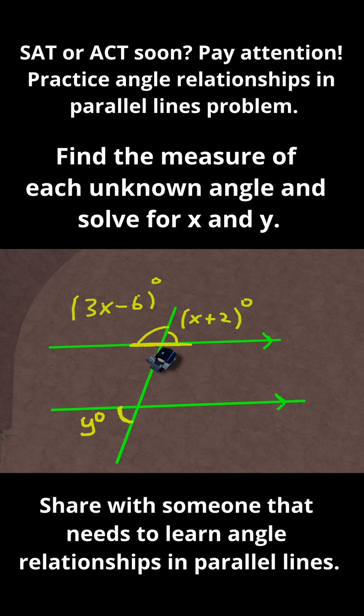That means that they add to 180 degrees. So if I add both of these together and set them equal to 180 degrees, I can maybe use that to solve for x. So let me do that. I'm going to say that 3x minus 6 plus x plus 2 is equal to 180 degrees.